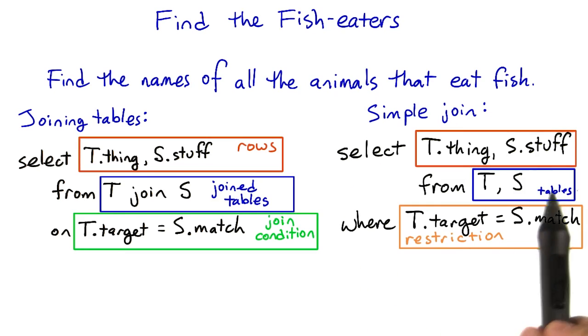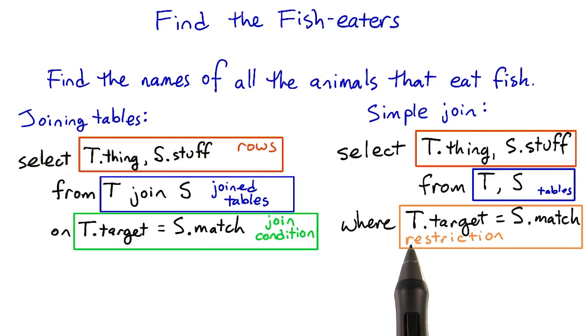If we want to join two tables to match up rows where the column target in table T equals the column match in table S, we can do it like this.